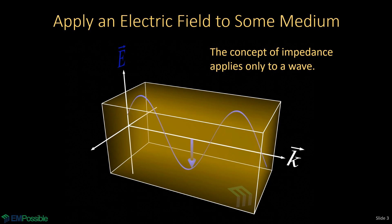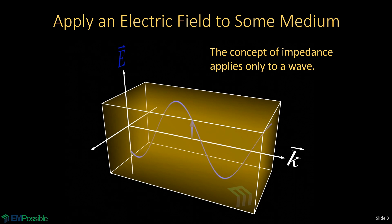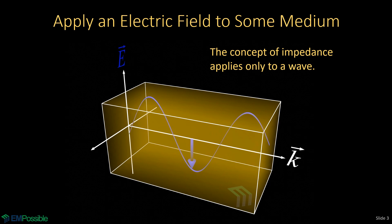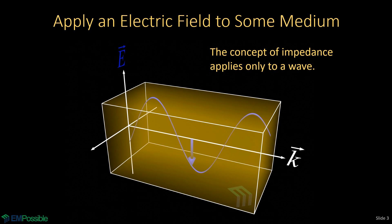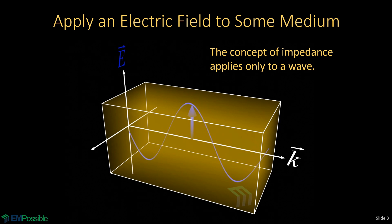The concept of impedance applies only to the electric and magnetic field components of the same wave. If there are multiple waves and they're all overlapping, we can't look at the totals of the electric and magnetic fields and apply impedance to that. We have to somehow isolate one of those waves — the electric and magnetic field components of that one single wave — and then apply impedance to that.